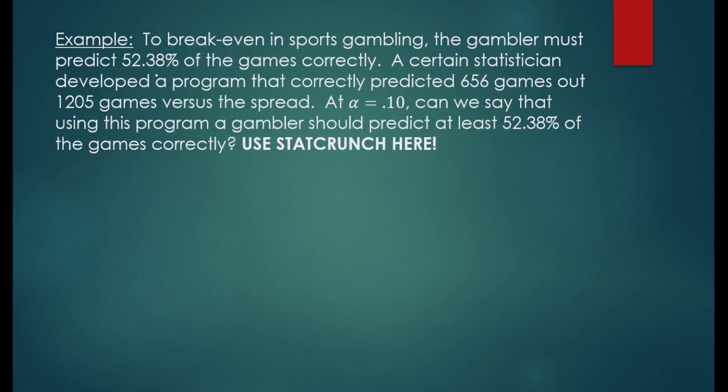To break even in sports gambling, the gambler must predict 52.38% of the games correctly. A certain statistician developed a program that correctly predicted 656 games out of 1205 games versus the spread. At alpha equals 0.10, can we say that using this program, a gambler should predict at least 52.38% of the games correctly? Use StatCrunch here.